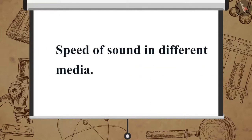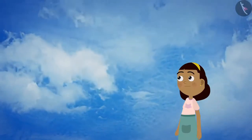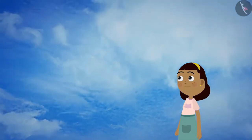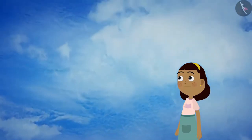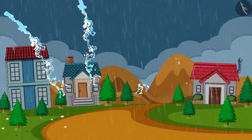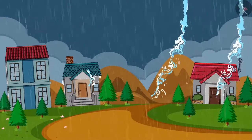Now let us learn about the speed of sound in different media. Sound travels in a medium at a finite speed. The speed of sound depends on the properties of the medium through which it travels. When lightning strikes, both the sound of thundering and flash of lightning occurs at the same time.